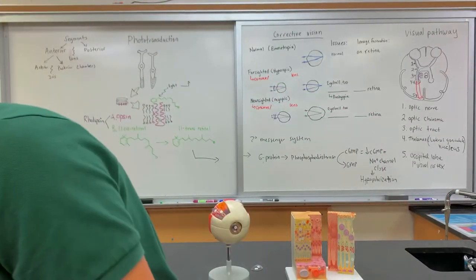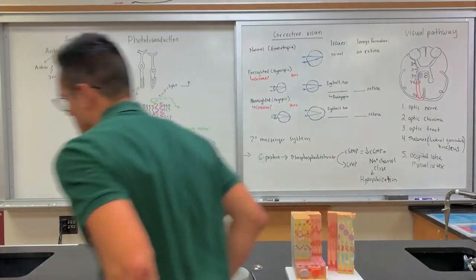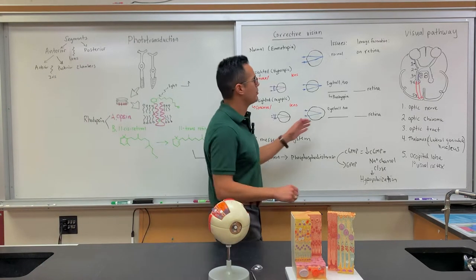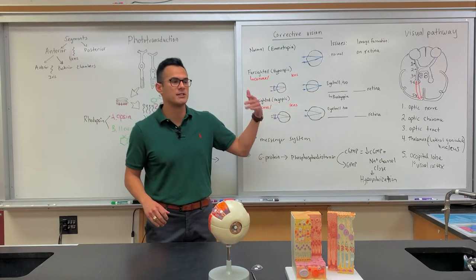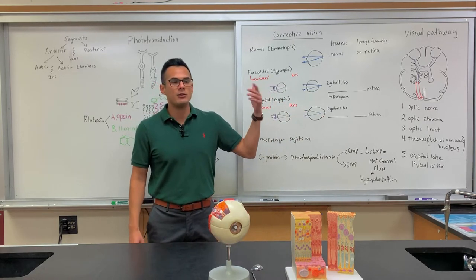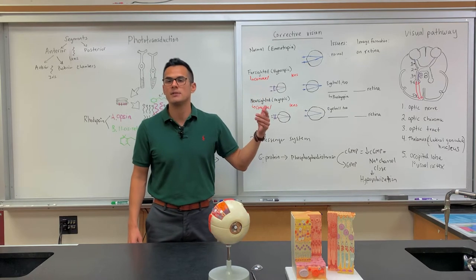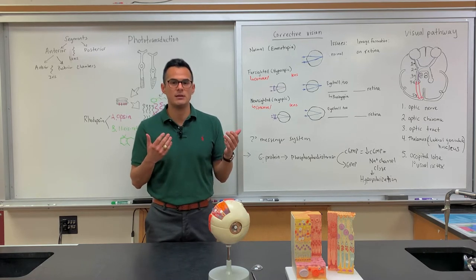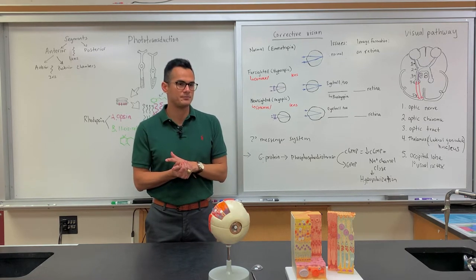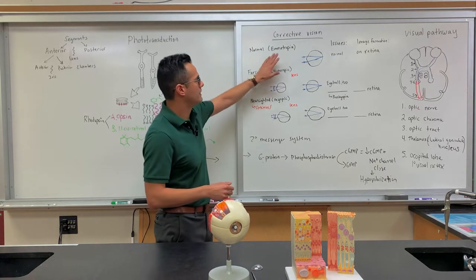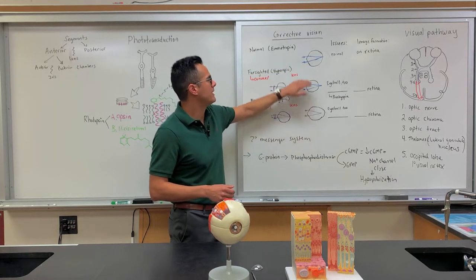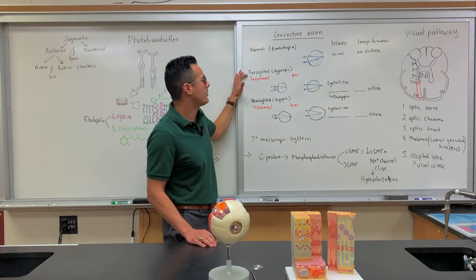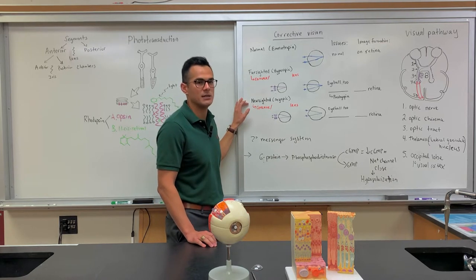Let me work my way to the board so we can talk about refraction. The reason refraction is important — especially with vision — is for corrective vision, understanding what type of lens the eye doctor prescribes to you. What I have drawn here are three different eyeballs: this represents a normal eyeball, this represents someone who is farsighted, and this eyeball represents someone who is nearsighted.